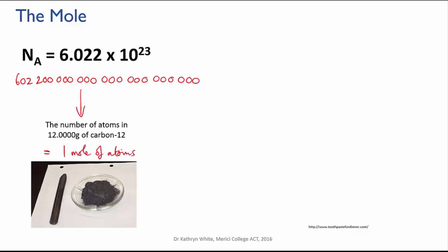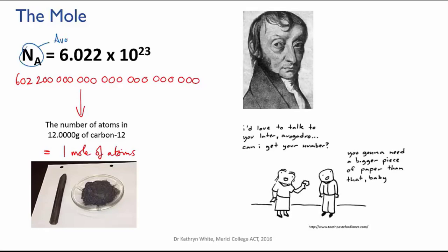Now apart from being the number of things in one mole, this number is also known as the Avogadro constant or Avogadro's number. Amadeo Avogadro was an Italian lawyer in the early 1800s. He became interested in mathematics and physics, and in 1820 he became the first professor of mathematical physics in Italy.